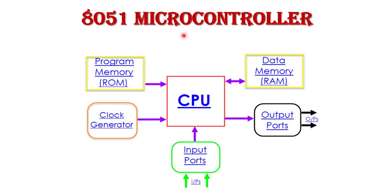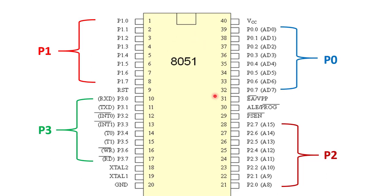Now, what do we mean by the 8051 microcontroller? The 8051 microcontroller was basically designed by Intel in the 1980s. It is the most popular and general-purpose microcontroller. The 8051 is an 8-bit microcontroller available in a 40-pin dual inline package IC. Here we see this 40-pin DIP IC of the 8051 microcontroller, with pins 1 to 20 on the left-hand side and pins 21 to 40 on the right-hand side.